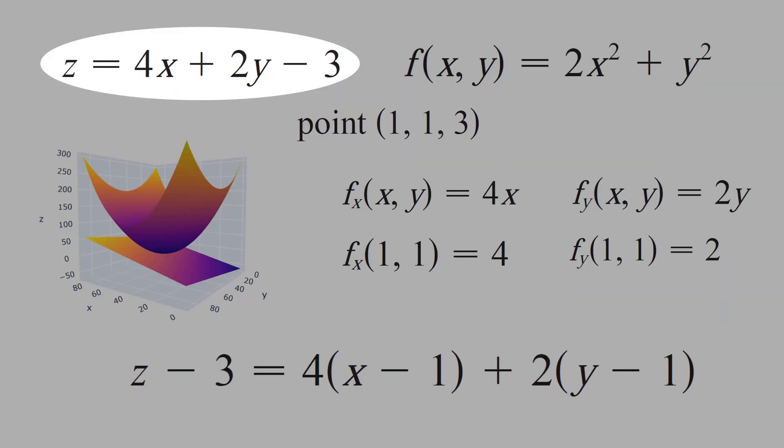And how do I know that the plane is tangent to the paraboloid at points 1, 1 and 3? If you take the partial derivative in respect of x, we get 4x. That evaluates at point 1 and 1, it's equal 4.